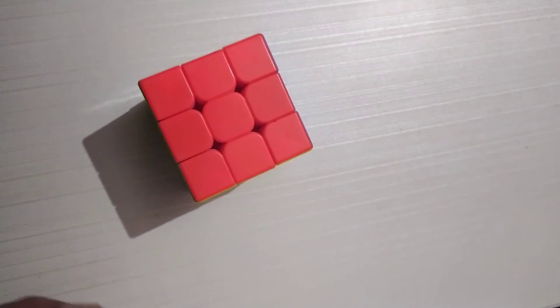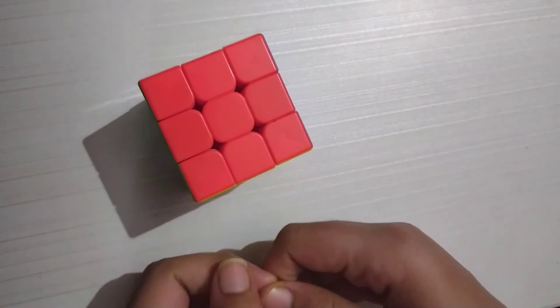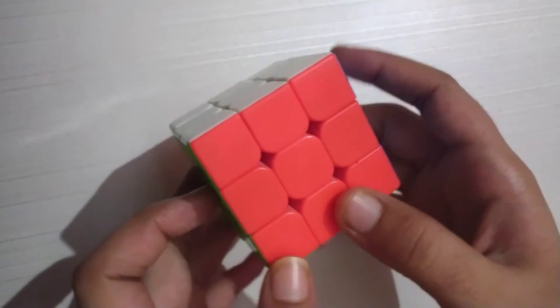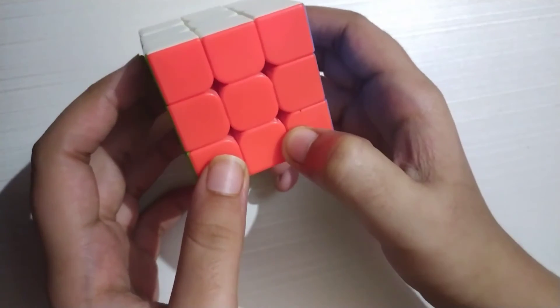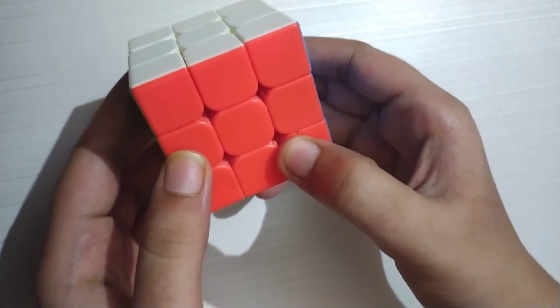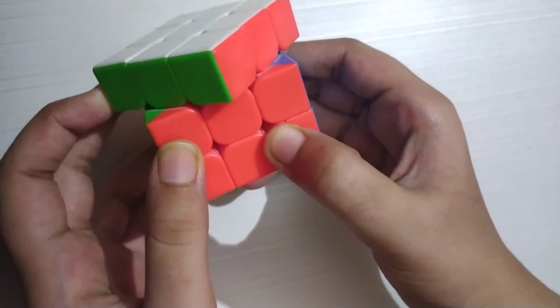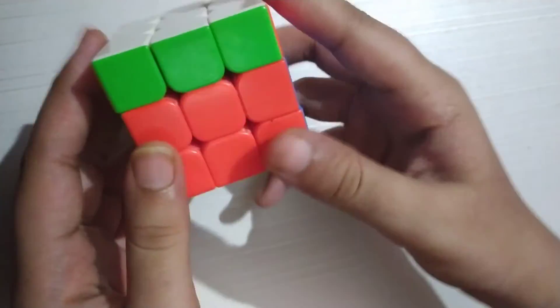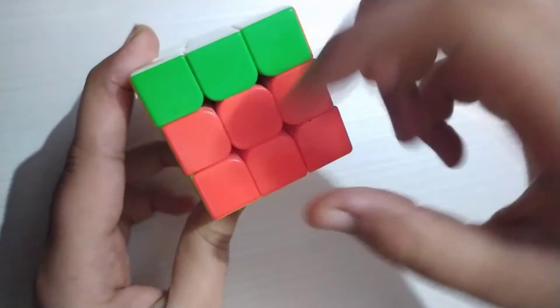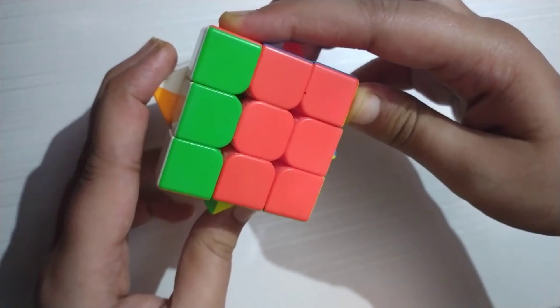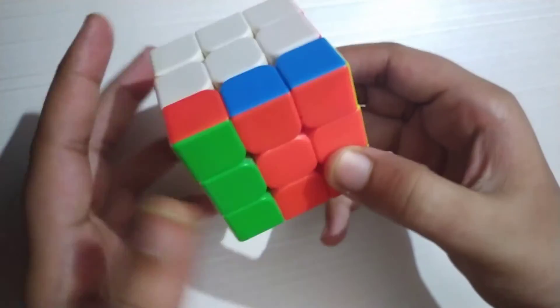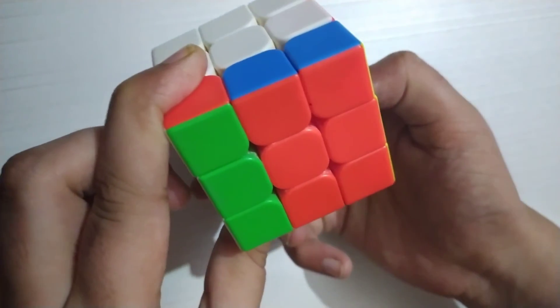Now we have to make the last plus pattern. Some people say the plus pattern. If you are looking for the best pattern, you will make the plus pattern. First, we will move the upper layer to the right side. Then we will move the front layer anti-clockwise. We will move the back side anti-clockwise.